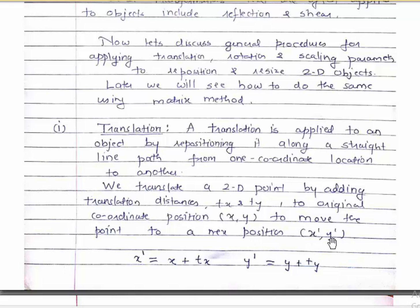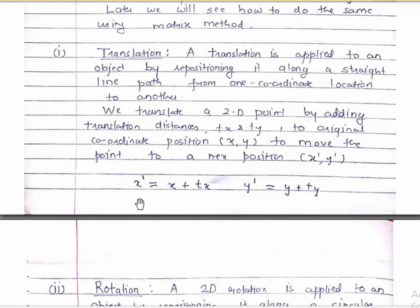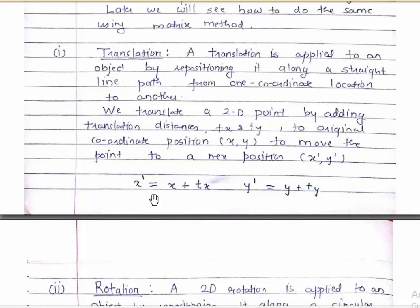We are given the translation factors: tx for the x coordinate and ty for the y coordinate. What we do is: x-dash, the new x coordinate position, is equal to x plus tx, and the new y coordinate position, y-dash, is equal to y plus ty. So this is basically translation — we are given a translation factor, we add it to the original coordinate positions, and we get the new coordinate positions.